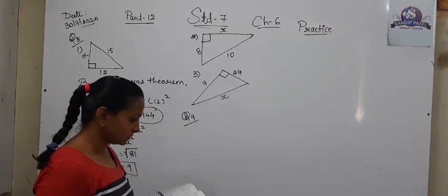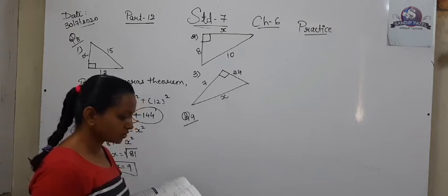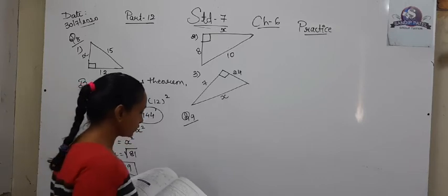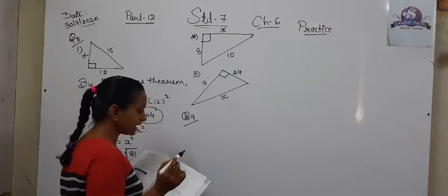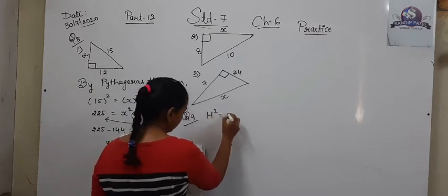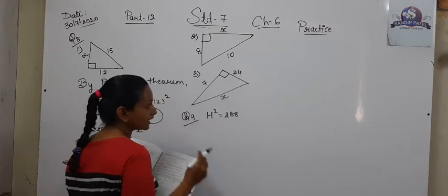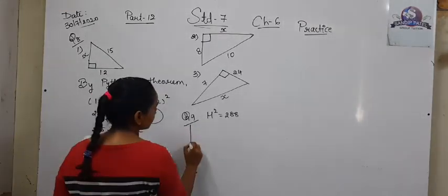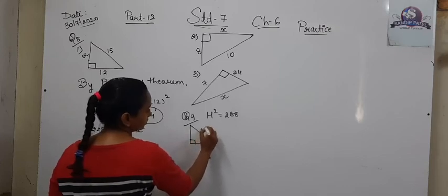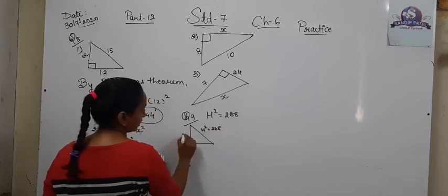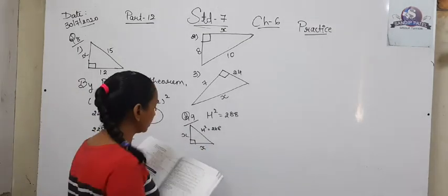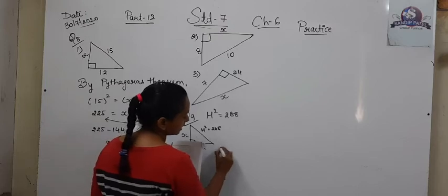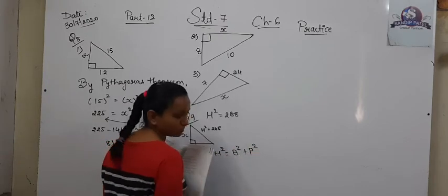Question number 9: the square of the hypotenuse of a right-angled isosceles triangle is 288 cm. Find the length of the legs. The hypotenuse squared is given as 288. Since it is isosceles, the two legs are equal — both are X. By Pythagoras theorem: hypotenuse squared equals base squared plus perpendicular squared, so 288 equals X squared plus X squared.